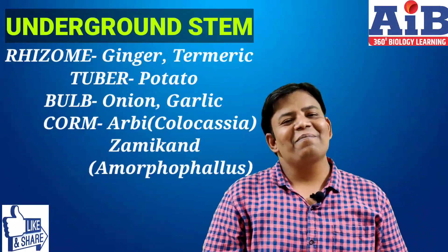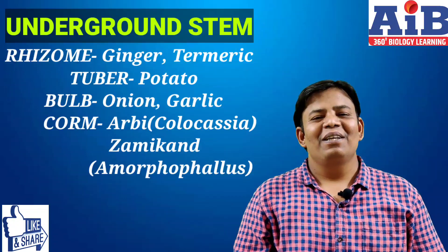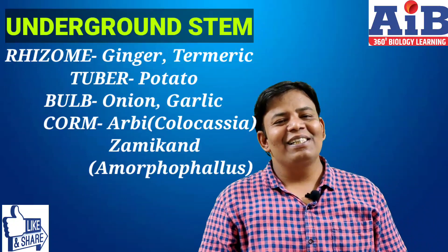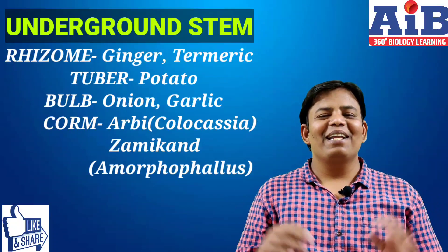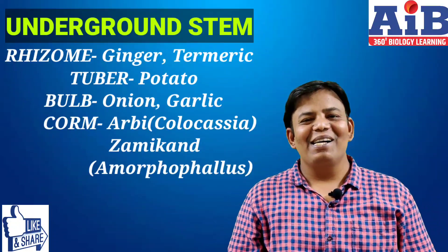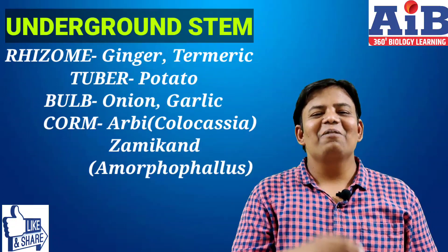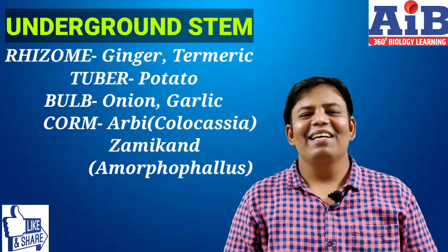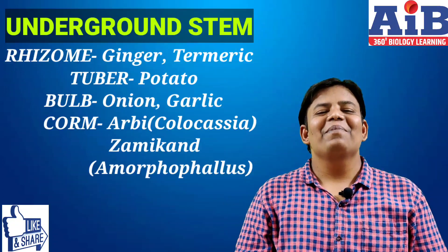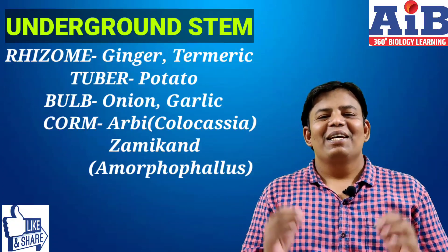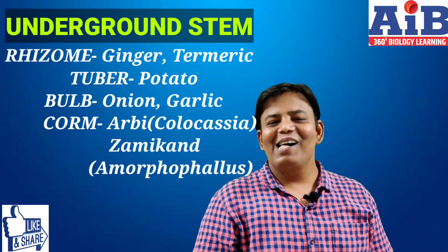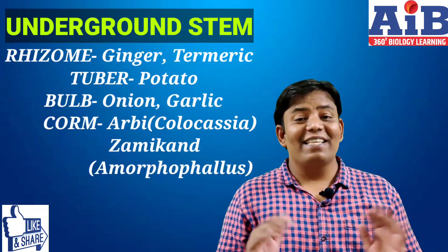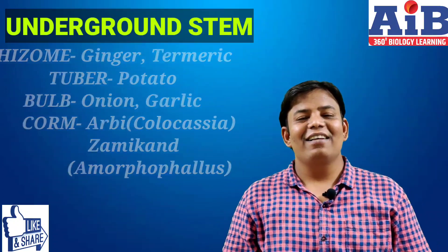Underground stem examples: Rhizome — Ginger, Turmeric. Tuber — Potato. Bulb — Onion, Garlic. Corm — Arbi (Colocasia). Zaminkand — Amorphophallus.